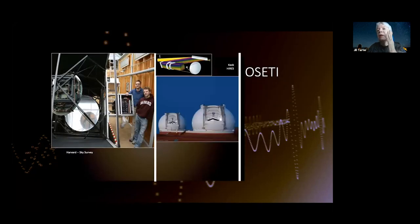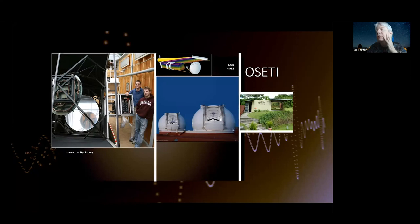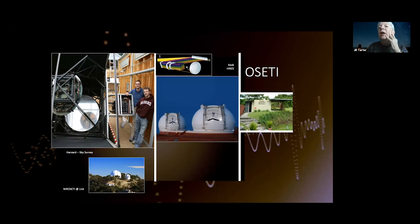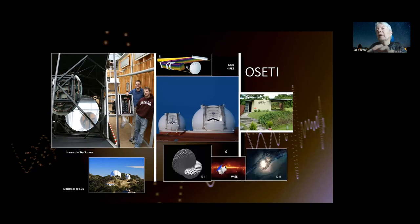The MWA Widefield Array is beginning to do sky surveys at low frequencies for SETI. For optical SETI, Harvard has a specifically built telescope. All data being taken at Keck for radial velocity studies of exoplanets is also being reanalyzed looking for engineered signals. There are amateur telescopes in Panama and elsewhere doing optical SETI. Lick Observatory has moved optical SETI into the infrared. It's also possible to do archival SETI as the G-HAT survey of WISE has done, looking for Kardashev Type 2 and Type 3 civilizations.